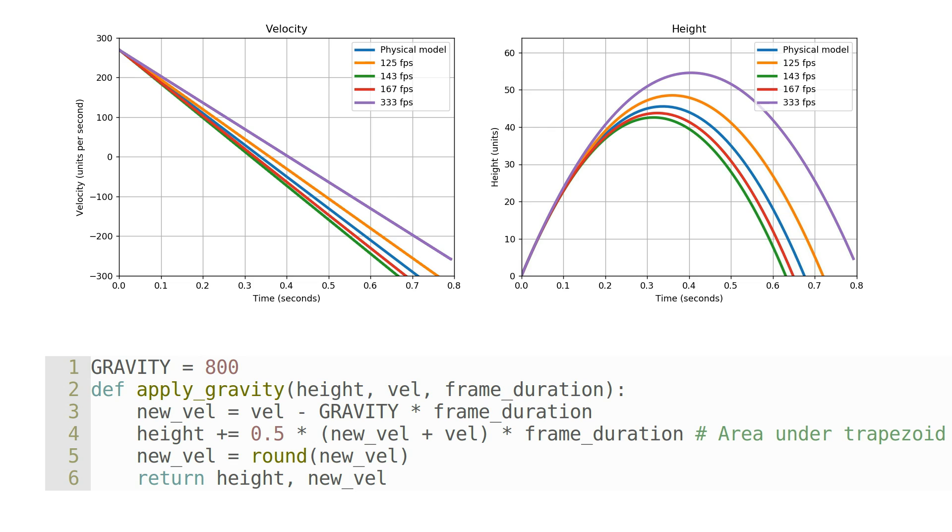Later on in Quake 3's life, this frame rate dependence was addressed by adding the PMoved fixed variable. When set to 1 on a server, this disregards the frame rate of each client, and does player movement updates at a fixed duration, thus levelling the playing field a little for those not in the know about optimal frame rates.